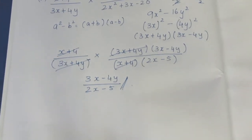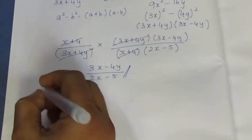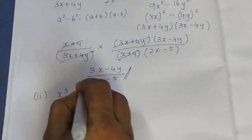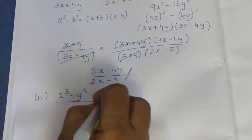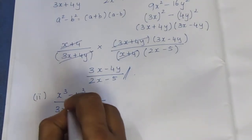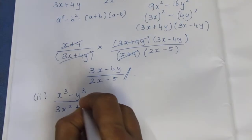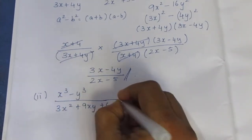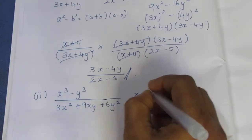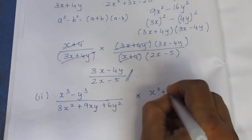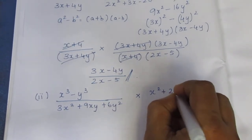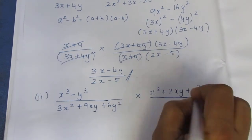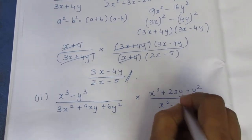Second question: Simplify (x cube minus y cube) by (3x square plus 9xy plus 6y square) into (x square plus 2xy plus y square) by (x square minus y square).